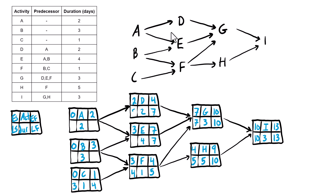Seven minus two is five for activity D. Seven minus four is three for activity E. For activity B, there are two successors, so we take the smaller of the late start values: three or four — we take three. Three minus three is zero for B's late start. For activity A, there are also two successors, so we take the smaller of five or three — we bring three in, and three minus two gives activity A a late start of one.